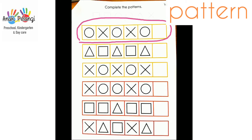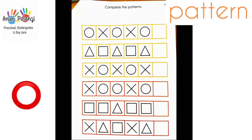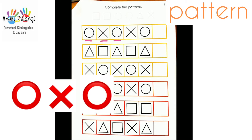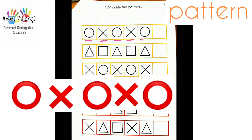Let's start from the first pattern here. Are you guys ready? Let's identify the shape first. Circle, cross, circle, cross, circle. What pattern comes after circle?